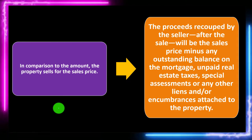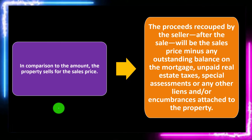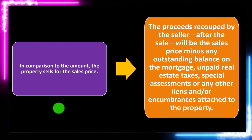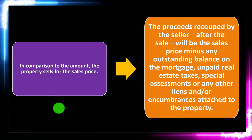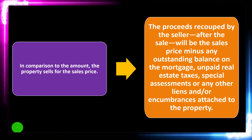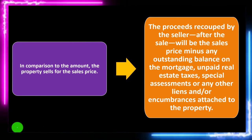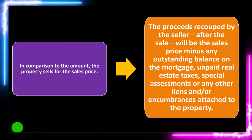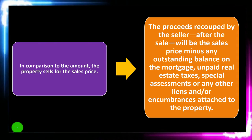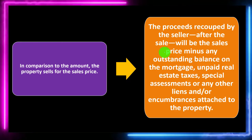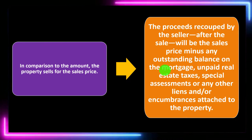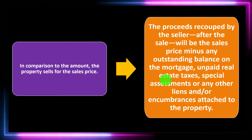The proceeds recouped by the seller after the sale will be the sales price minus the outstanding balance on the mortgage, unpaid real estate taxes, special assessments, or any other liens and encumbrances attached to the property. So we have the list price — the starting advertised price — the sales price — the actual amount agreed upon — and then the proceeds for the seller, which is the sales price minus all those other obligations like the outstanding mortgage and unpaid taxes.